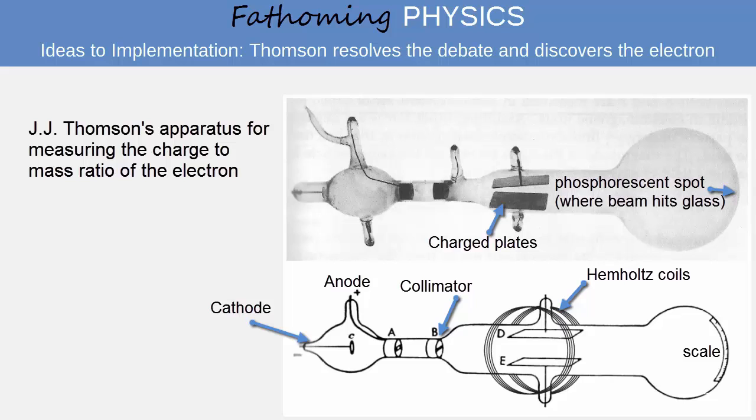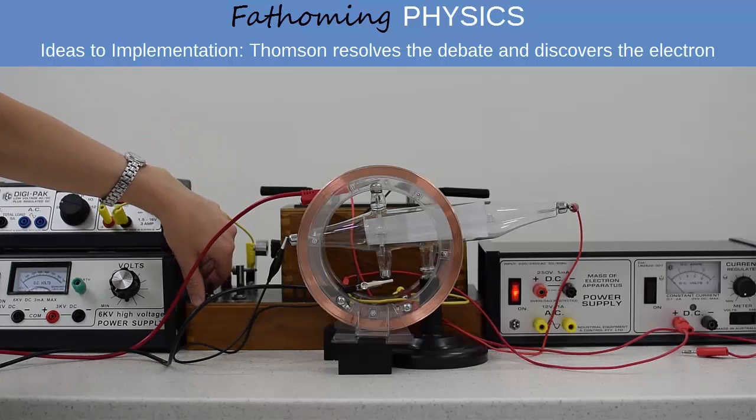Having established that cathode rays were streams of charged particles, J.J. Thompson performed two experimental measurements of the charge to mass ratio of the cathode rays. In the one usually discussed in the HSC, he used a cathode ray tube shown here. Electrons are emitted from the cathode and then accelerate towards the anode, passing through two small holes so that only the electrons that are travelling in a straight line enter the rest of the tube. Thompson used two electrically charged plates to produce an electric field, and ran current through two Helmholtz coils to produce a uniform magnetic field.